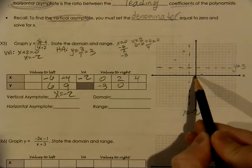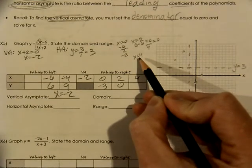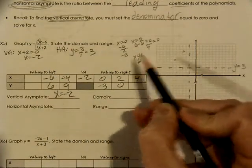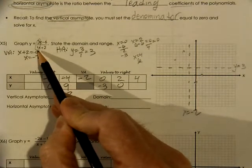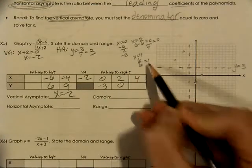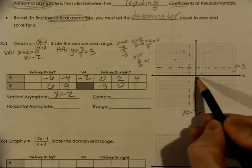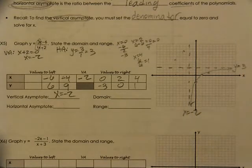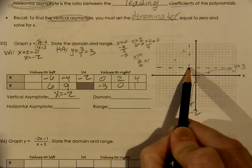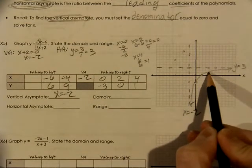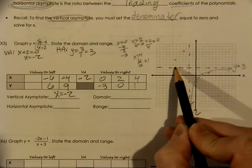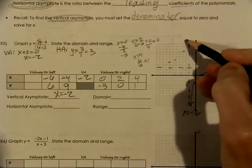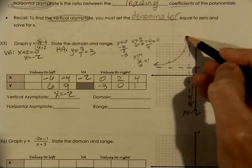When we plug in four, three times four is twelve. Twelve minus six is six. Four plus two is six. So that comes out to one. When x is four, we are up at one. That allows us to plot the line. From the asymptotes, that is over six and down two, so we go over six and up two on the other side. We are always going in the opposite direction because it is symmetric.